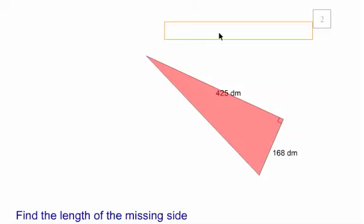We have to find the length of the missing side to solve this Pythagorean question. So this is a right-angled triangle, so we can use Pythagoras' theorem.